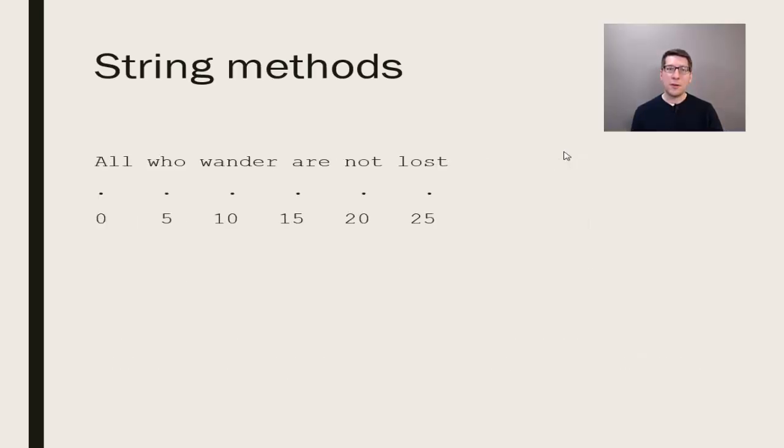Before we talk of any further methods, let's remind ourselves that a string is a set of characters, where each individual character can be referenced by an index. These indices start at zero and will run up to the length of the string minus one. In our string, the character capital A is at index zero. The character lowercase H in "who" is at index five, and so on. The last character, the T in "lost," is indexed twenty-six.